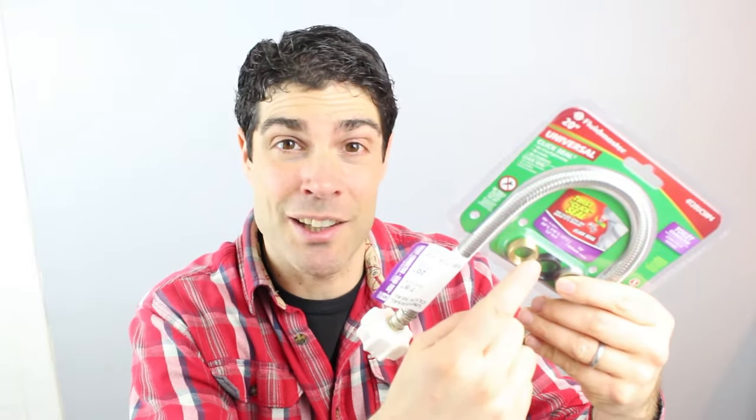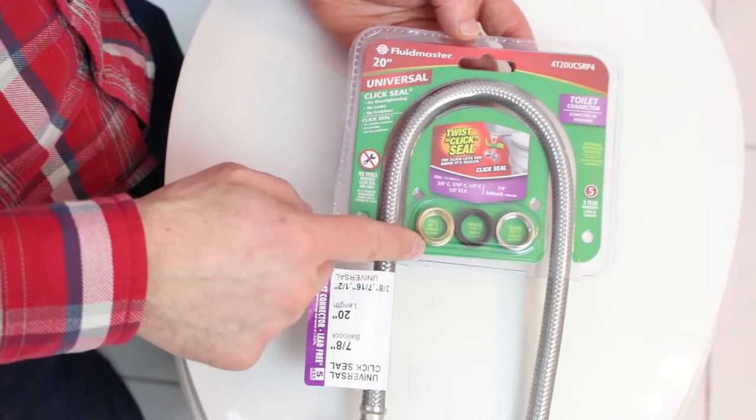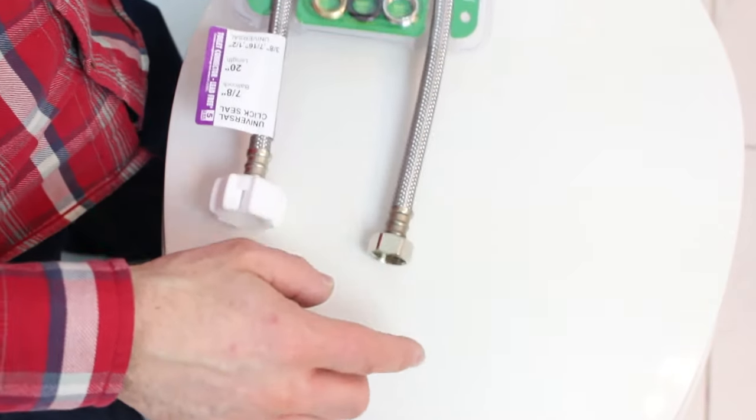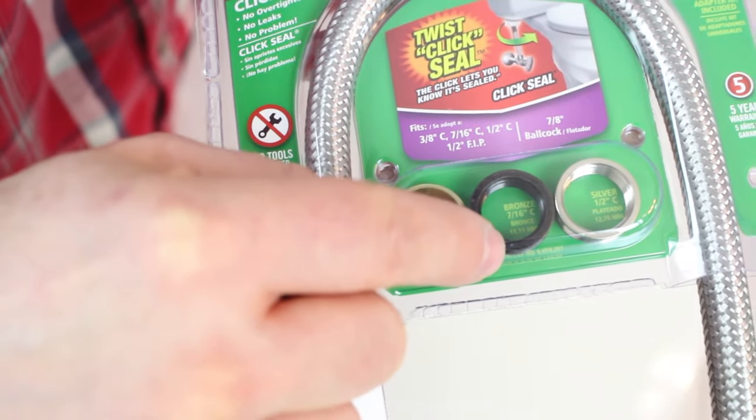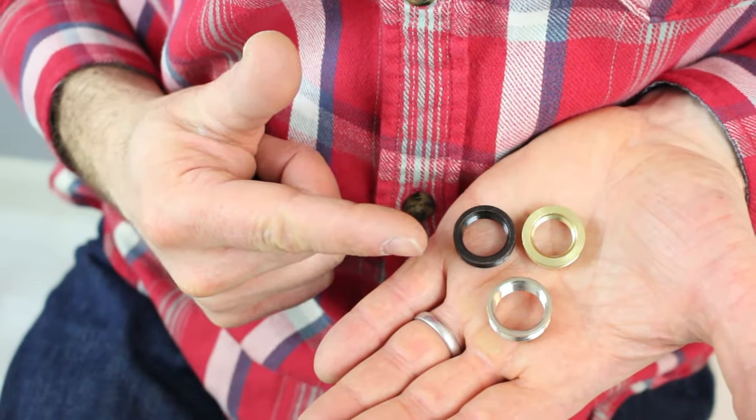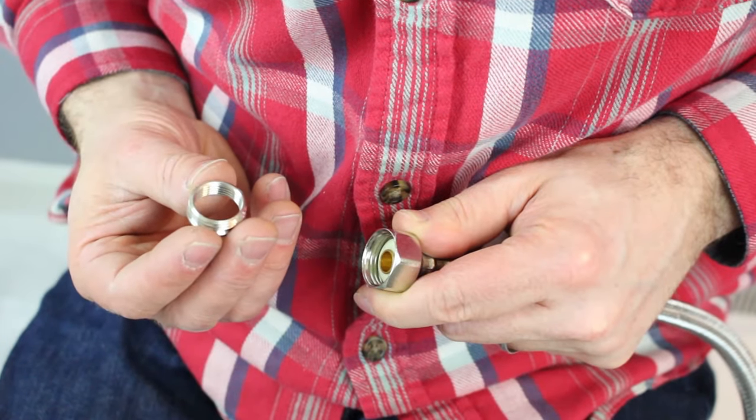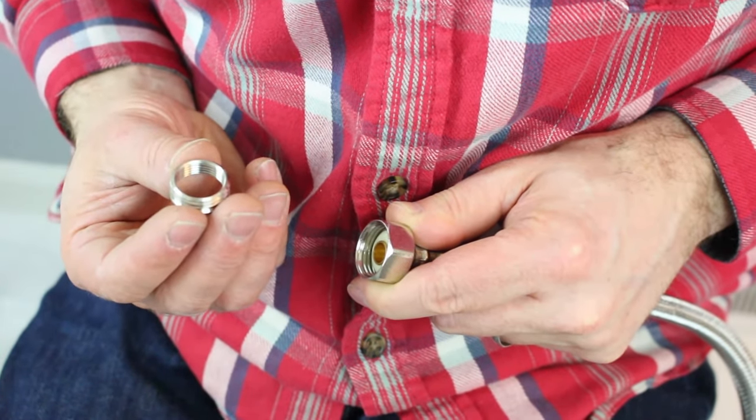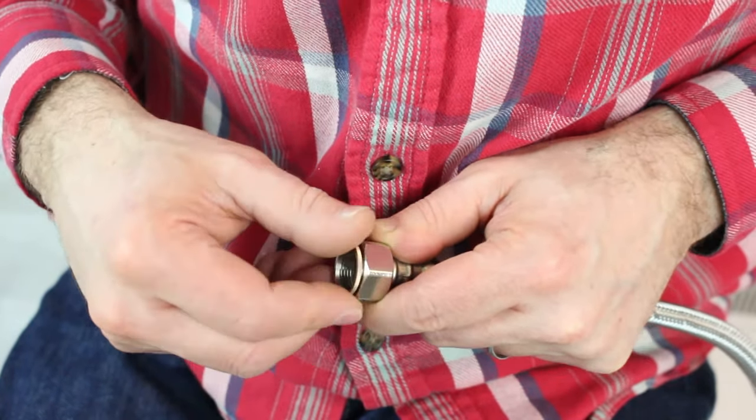If you're not sure what size fitting you have between the shutoff valve and one of these water supply lines, there's a kit that you can get. This is called the Universal Click Seal Toilet Connector Kit. It comes with three different fittings—one, two, three—that fit into this part of the water supply line. The gold fitting is 3/8ths, the black fitting is 7/16ths, and the silver fitting is 1/2 inch. These fittings are really easy to use. You just need to determine which one you need for your shutoff valve. So for example, if your shutoff is 1/2 inch, you take the silver adapter and you thread it into the metal nut of your water supply line.